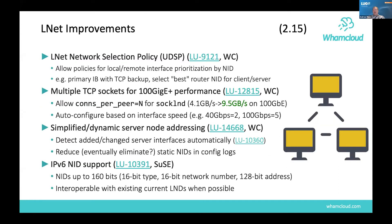In terms of LNet, there are quite a number of interesting things. As discussed previously, multi-rail has been ongoing for a while. The next stage is called the LNet network selection policy, formerly UDSP, which essentially allows tuning network access by selecting a specific interface based on the peer you're communicating with. This allows optimizing the network route when you have multiple interfaces.